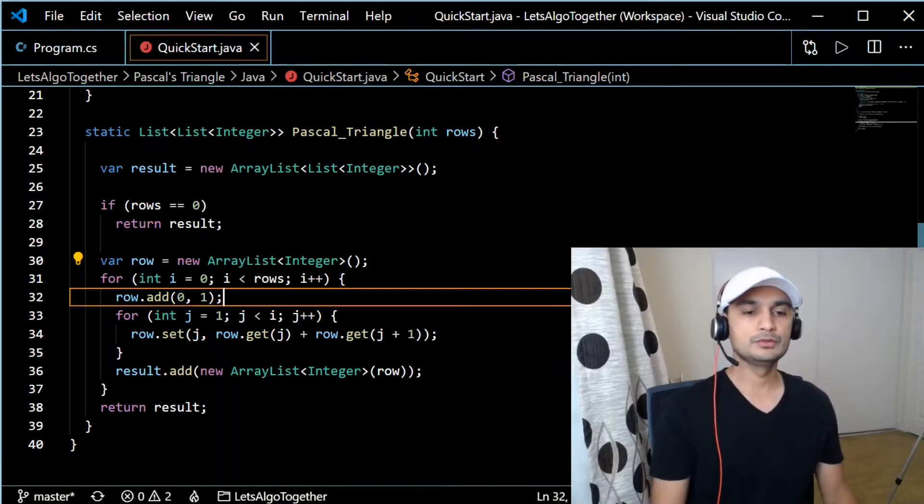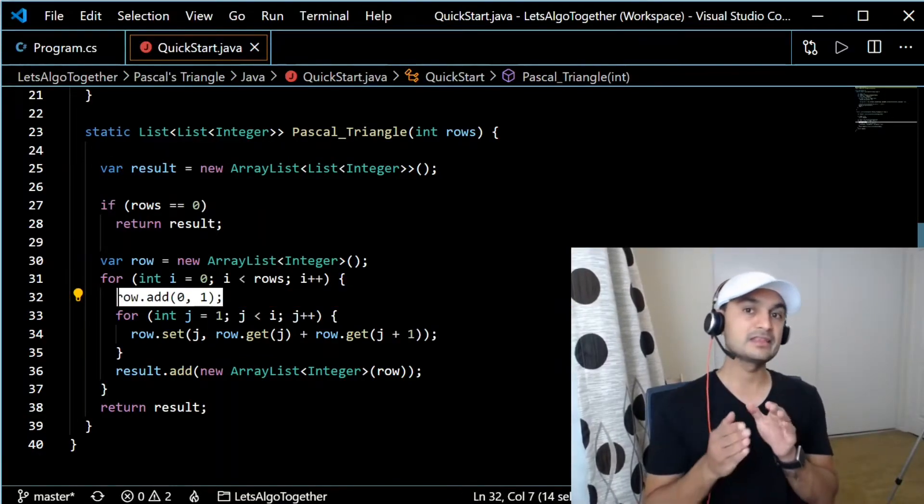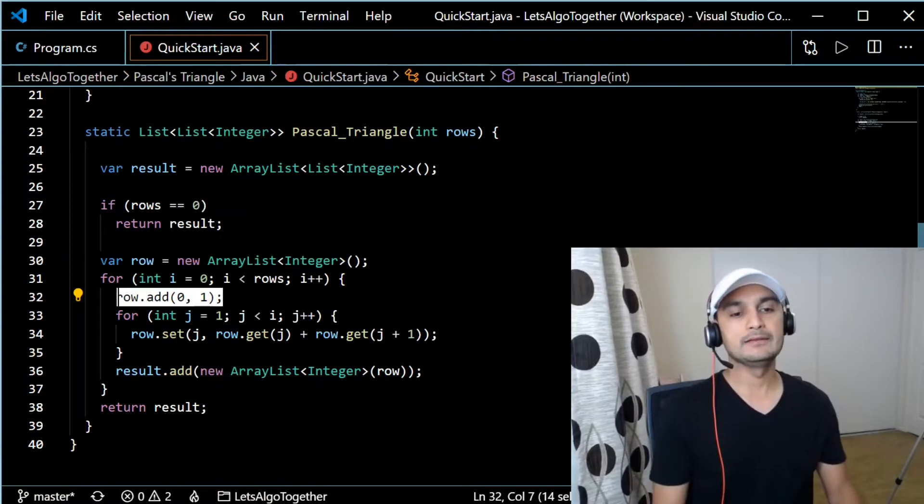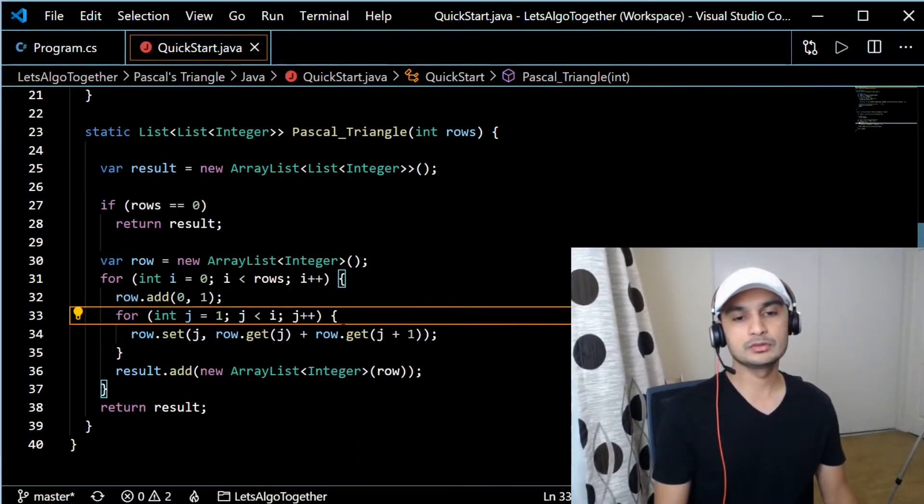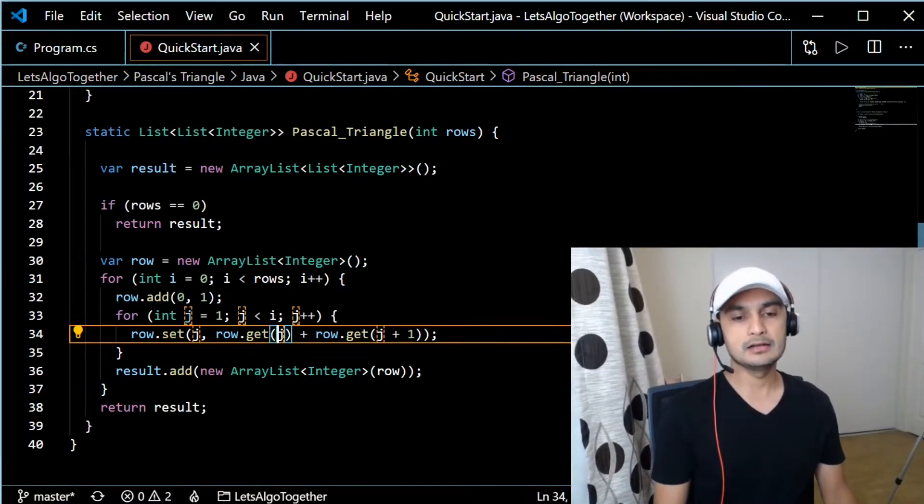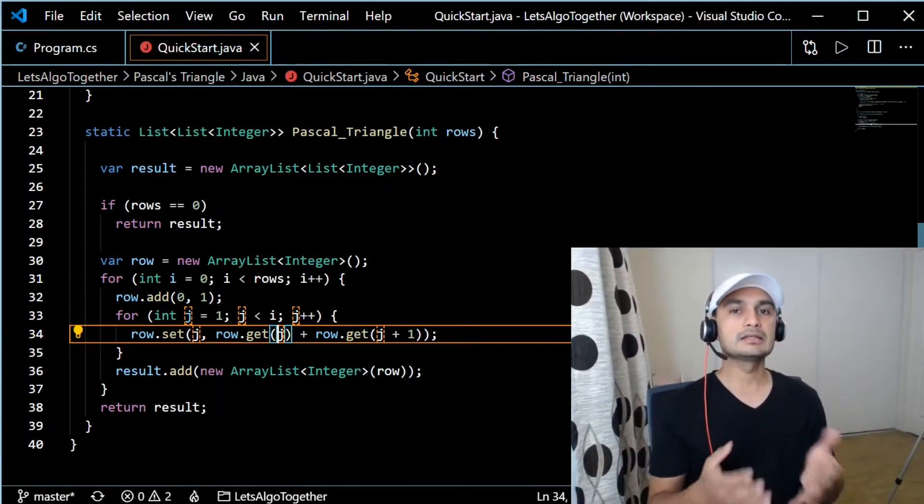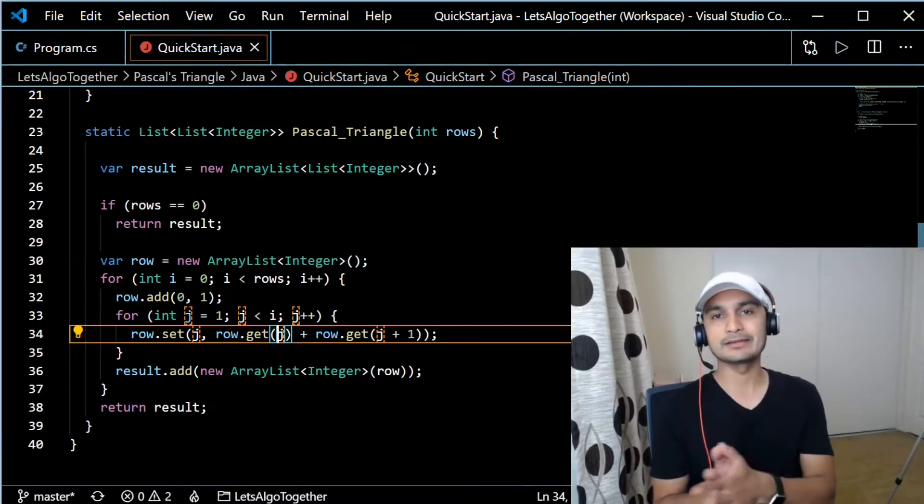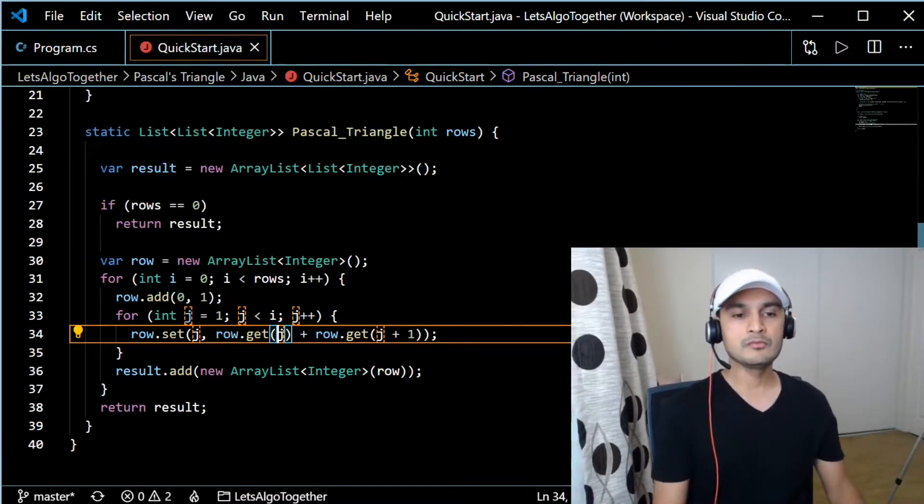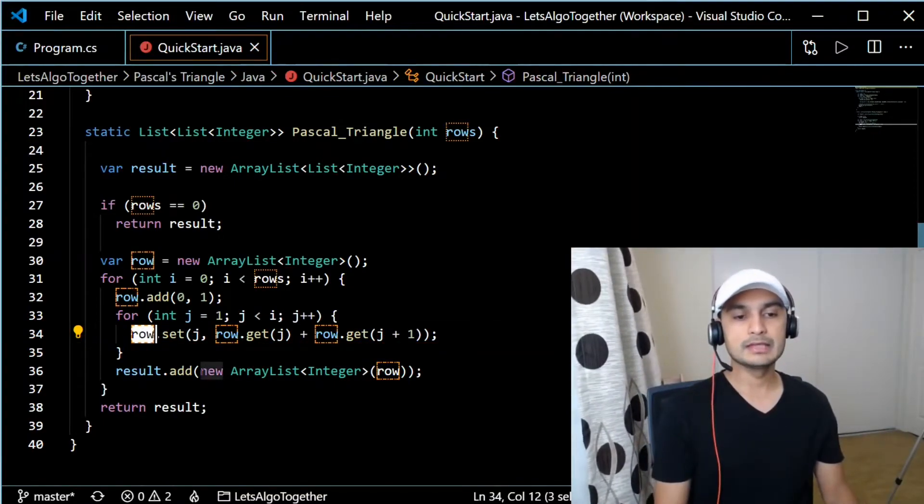And what we do, as we discussed, is we add one at the start of the row and then we loop over the row. And then we add the current element and next element except for first and last, and that's how we get the next row for the Pascal's triangle. And then once we have it, we add it to the result.